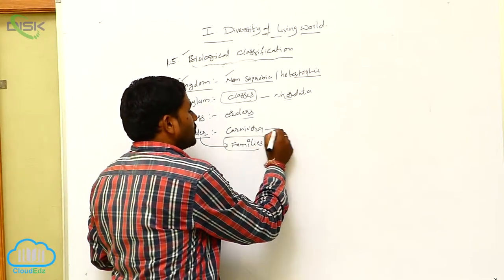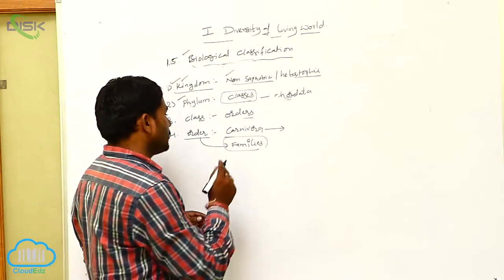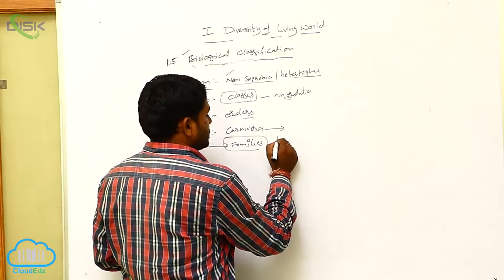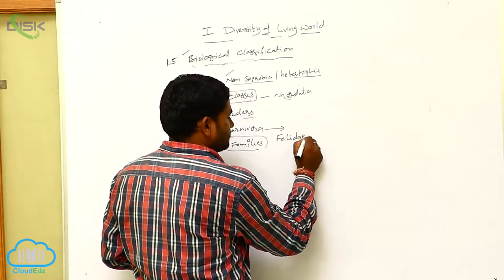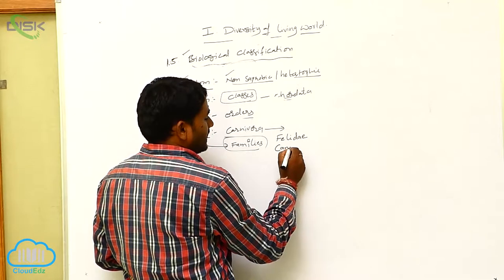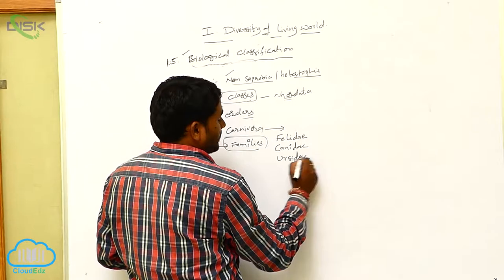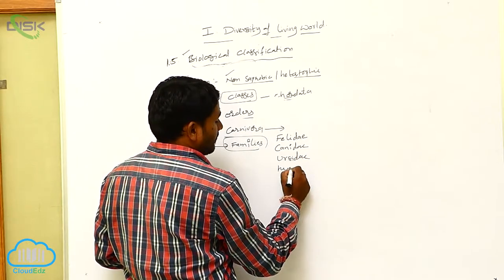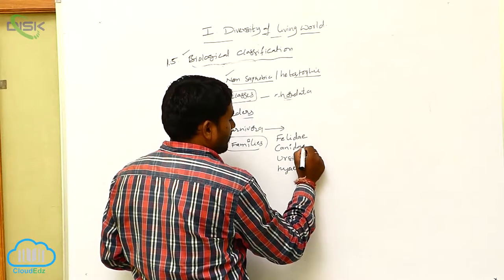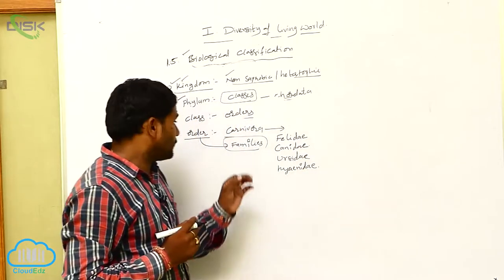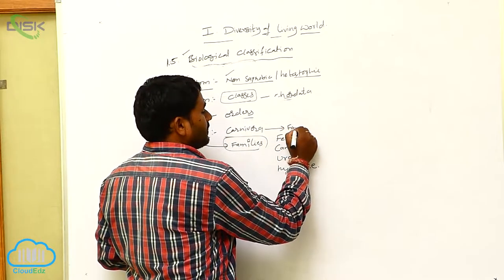For example, if you take the Carnivora order, in the Carnivora order we generally have: Felidae, Canidae, Ursidae, and Hyaenidae. So Carnivora has these families.